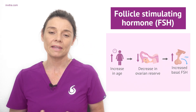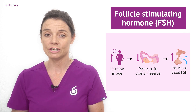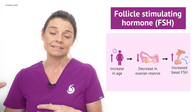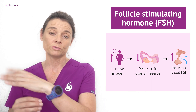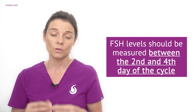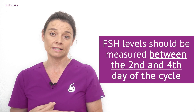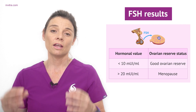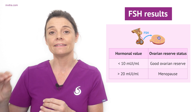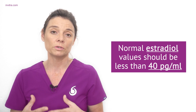Follicle stimulating hormone, FSH, is another hormone that your specialist will want to take a look at. FSH levels increase as a woman ages due to the lessening amount of other hormones that inhibit the ovarian activity. When there is less inhibition of ovarian activity, follicle stimulating hormone levels can rise. The FSH test is usually done between days four and five of your menstrual cycle, with day one being the date of the monthly period, and it's often done in conjunction with the estradiol test. FSH values of less than 10 generally show a good ovarian reserve and values over 20 indicate that the woman is nearing menopause. When looking at estradiol levels at the beginning of the menstrual cycle, these are usually around 40 picograms per milliliter.